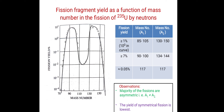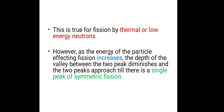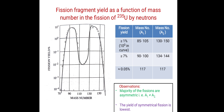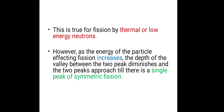The second observation is that the yield of symmetrical fission is the lowest. When both fragments have mass number 117, the fission yield is only 0.05%. These two are the main observations of this plot, and they are true for fission by thermal or low energy neutrons, not for high energy neutrons.